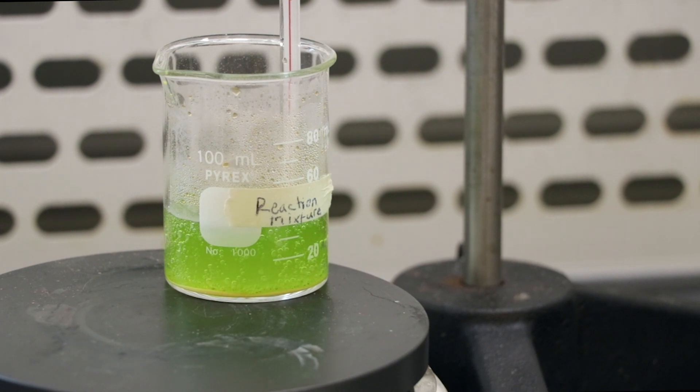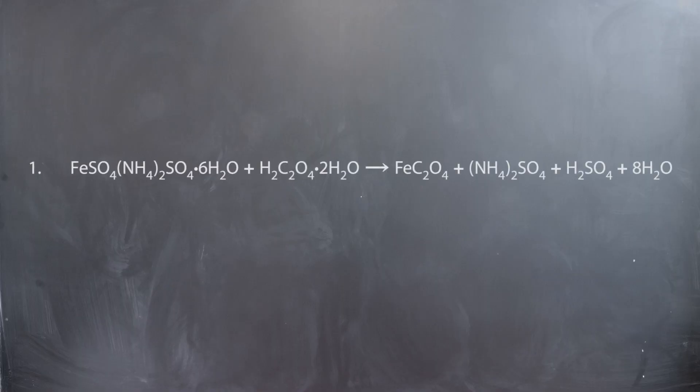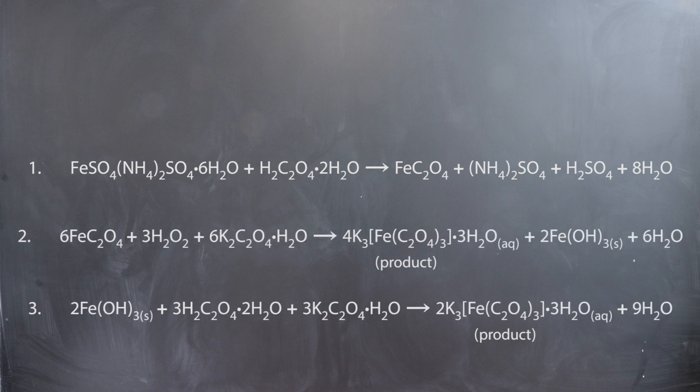During the entire operation, you should be keeping the solution on the hot plate at a gentle simmer. Congratulations! You have successfully synthesized your product. The brown precipitate that formed after adding the hydrogen peroxide is the ferric hydroxide, and the green solution represents the triaxalato ferrate ions. Now you need to recrystallize the triaxalato ferrate to form your potassium triaxalato ferrate trihydrate.